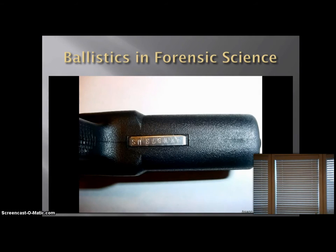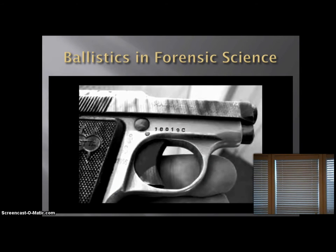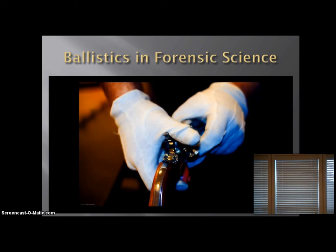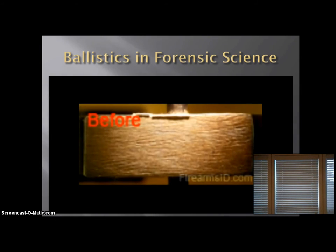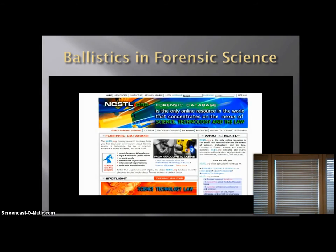Having the serial number on the firearm allows an investigator to trace a weapon to the owner. Often the serial number has been filed off or a false number may have been stamped as a replacement. There are several techniques to restore obliterated serial numbers, including applying a suspension of magnetic particles, using an acid solution, or using ultrasonic vibration. For more information, please visit NCSTL.org.